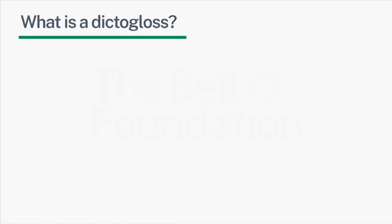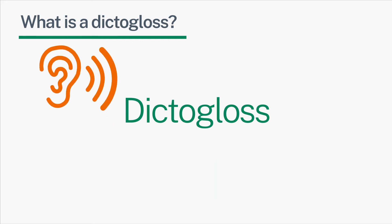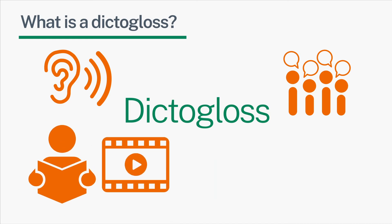What is a dictogloss? A dictogloss is a type of supported dictation that integrates the four domains of listening, speaking, reading and viewing and writing. The teacher reads a short topic-based text several times and the learners listen and try to produce their own version as close to the original as possible.